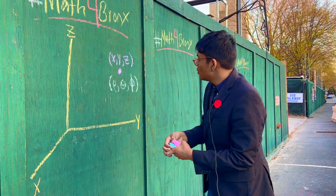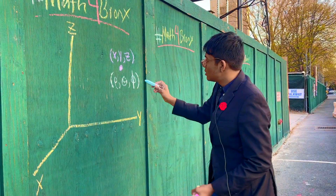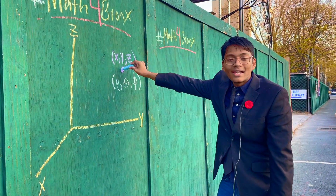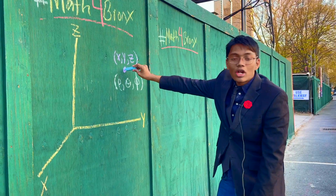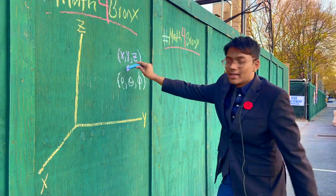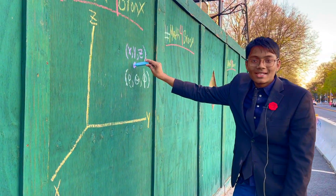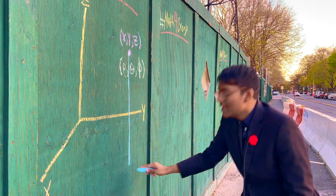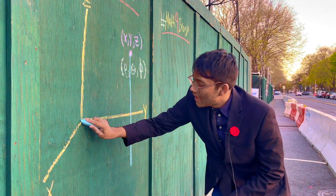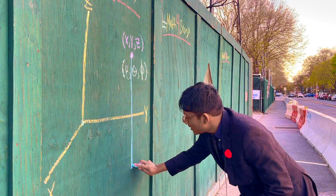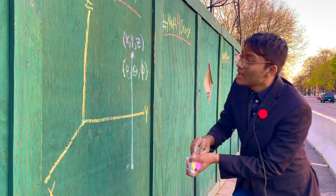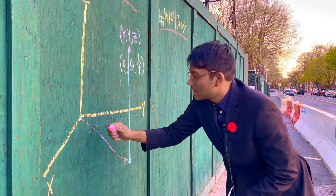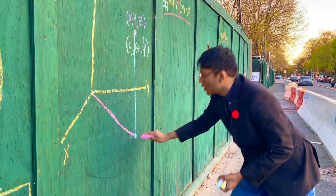All right, so I'm going to show you the very quick derivation to doing this. First thing we're going to do is start at our point and then drop a line — drop an altitude to the x,y plane. Now we're going to connect the point where this altitude hits the x,y plane to the origin.